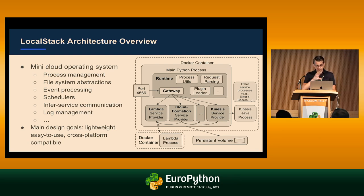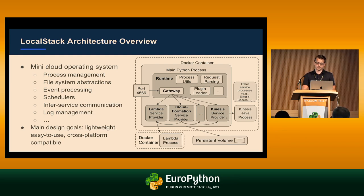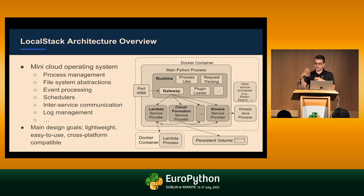We have a Lambda service provider, CloudFormation, Kinesis — basically for all these different AWS services, there's one service plugin. Some of them actually spawn new Docker containers, like Lambda. Some call external processes — for example, Kinesis, where we use a third-party tool called Kinesis Mock. There's also inter-service communication, for example CloudFormation, which is used to deploy templates and talks to all these other services. The goal is to be lightweight, easy to use, and cross-platform compatible.